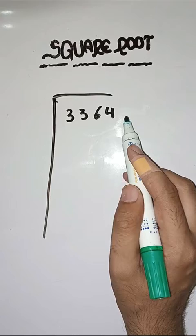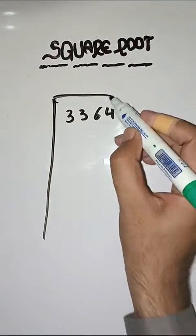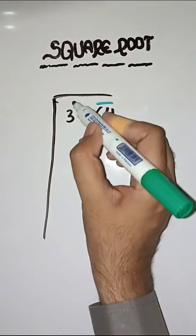First step is we have to make pairs from right to left like this. 64, 33.